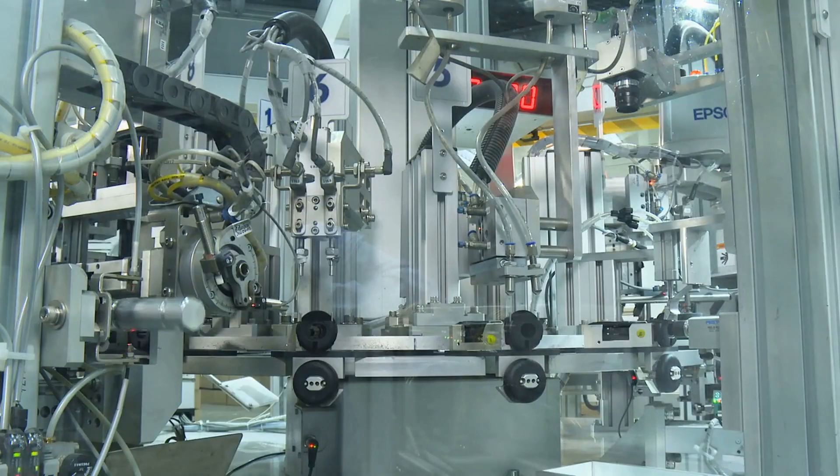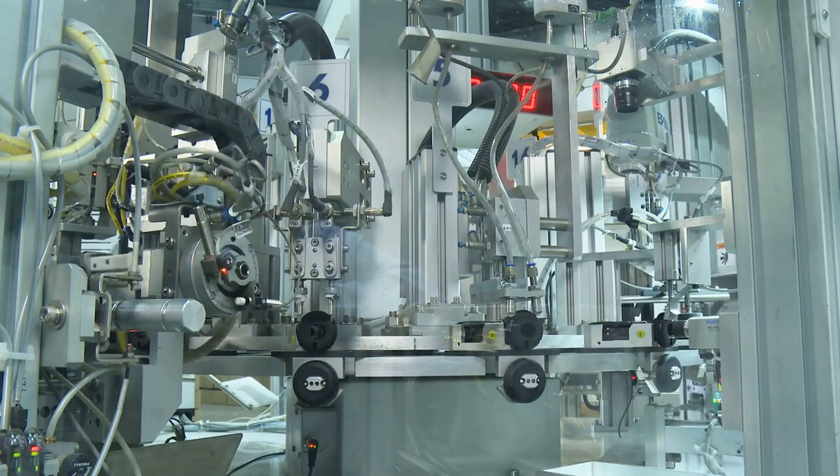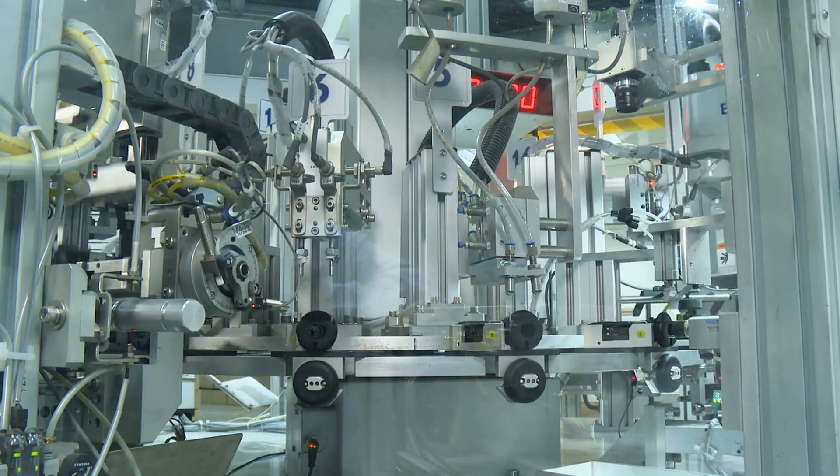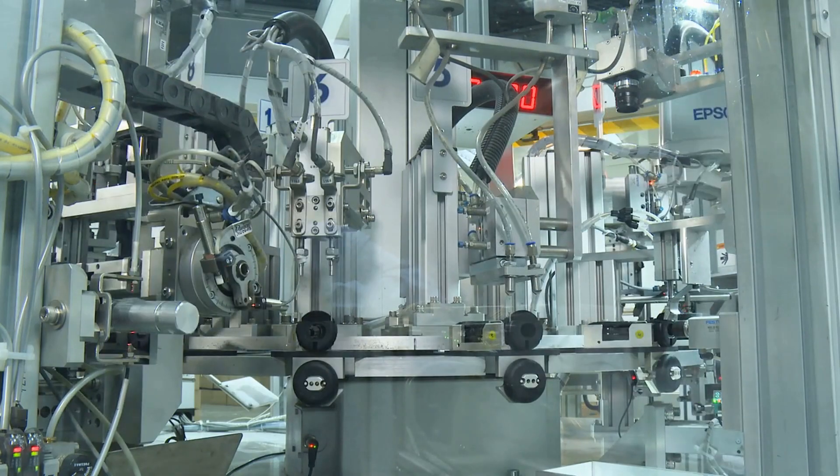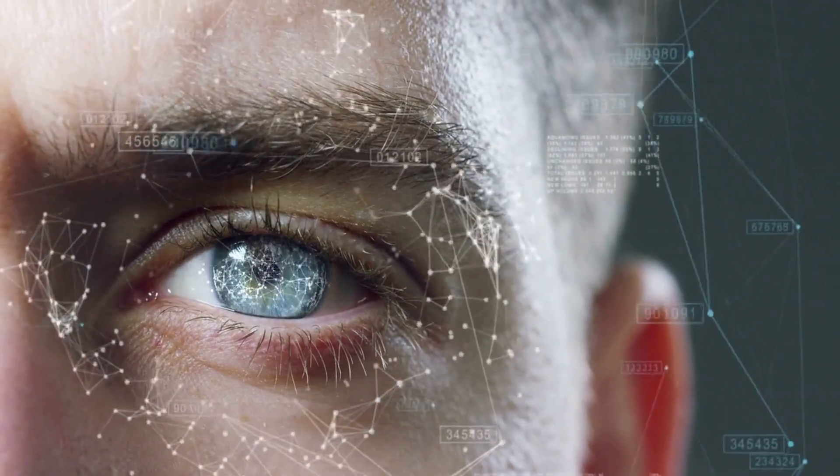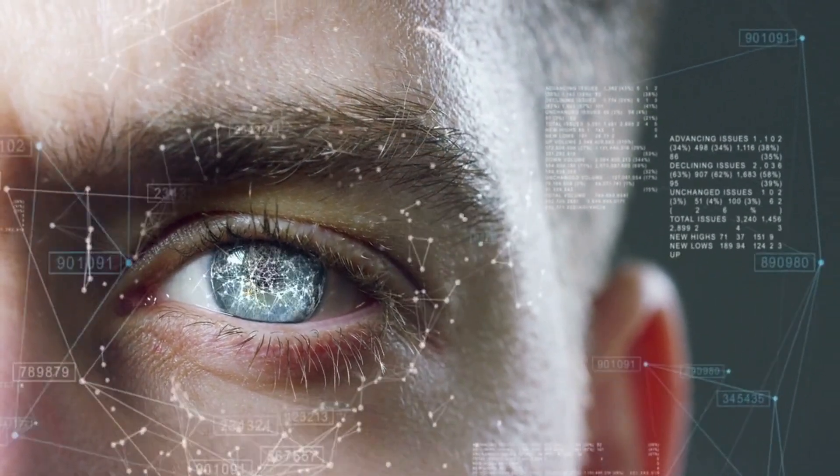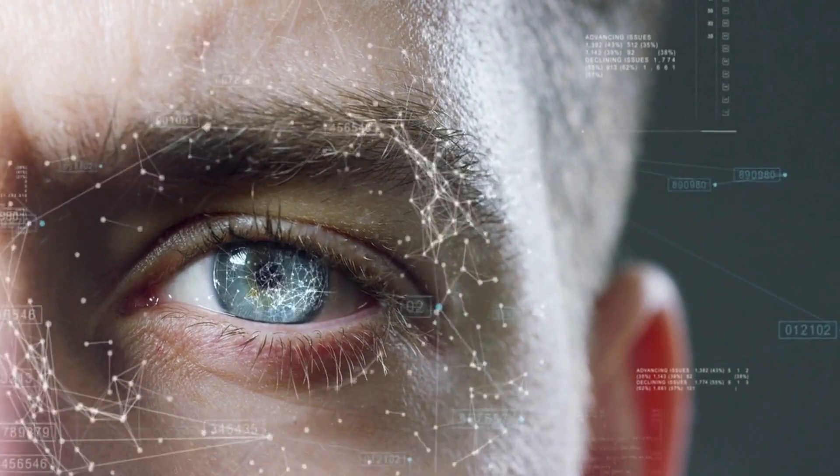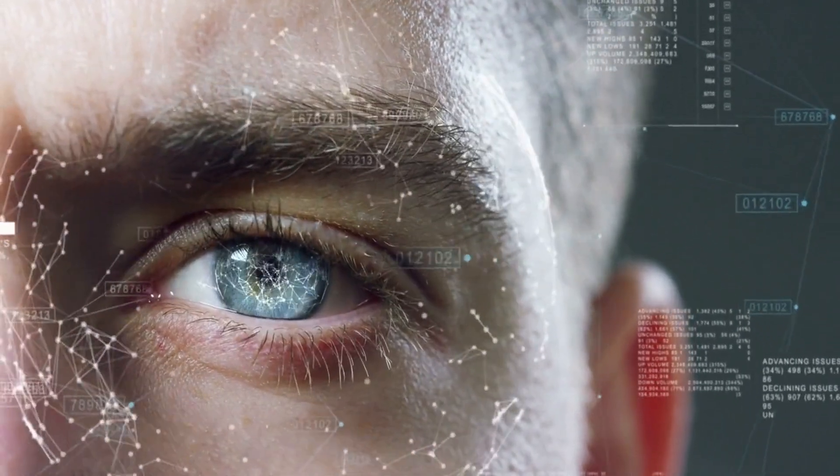Manufacturing. AI is being used in manufacturing to optimize production, reduce costs, and improve quality. For example, computer vision can be used to inspect products for defects, and machine learning can be used to optimize production schedules and reduce waste.